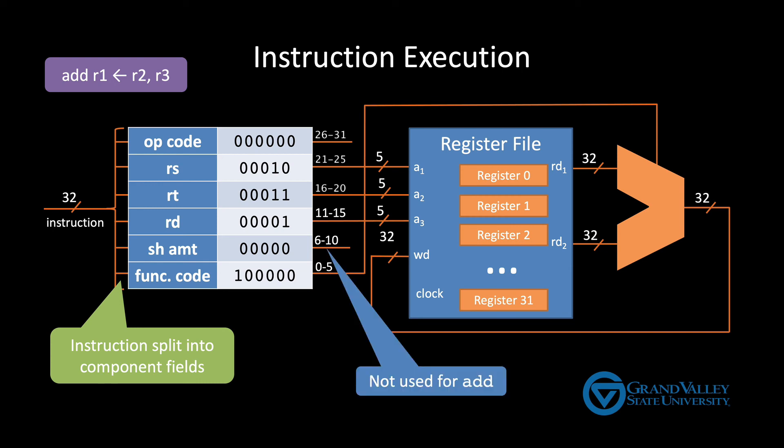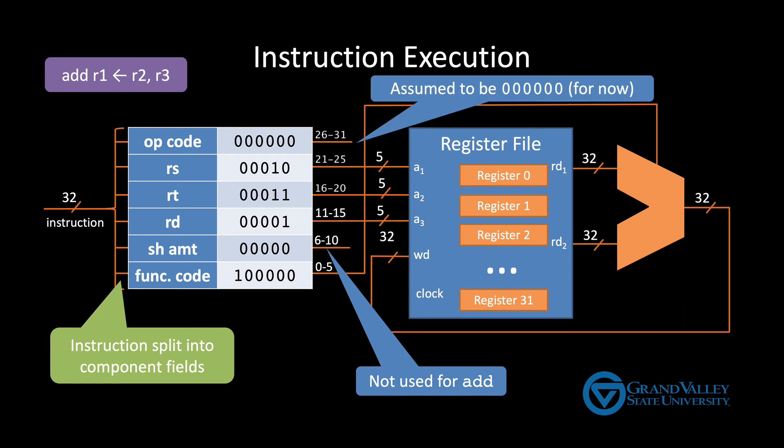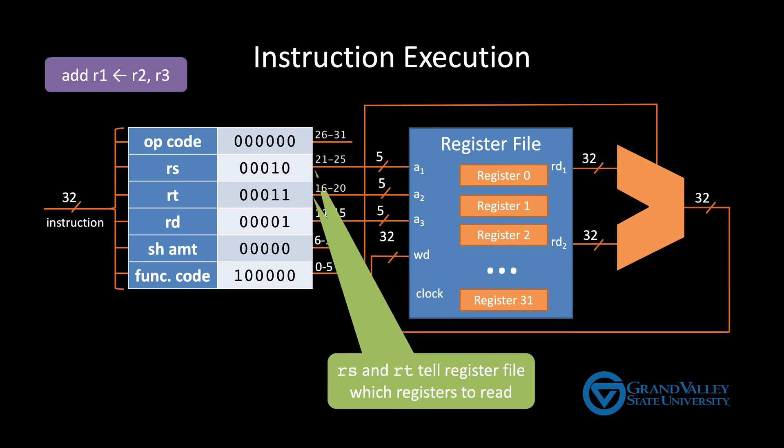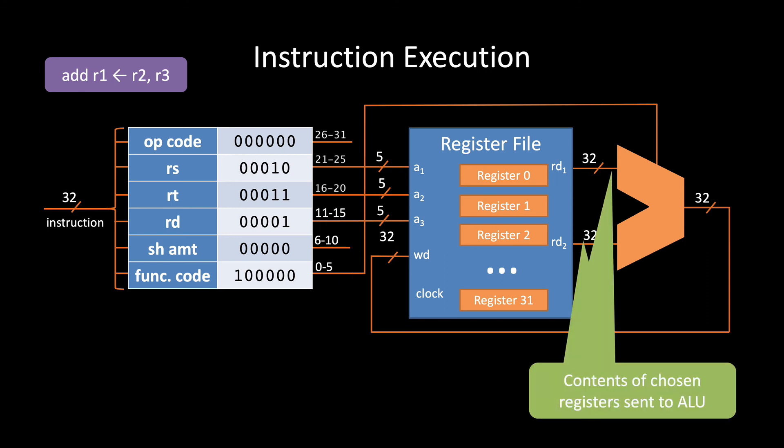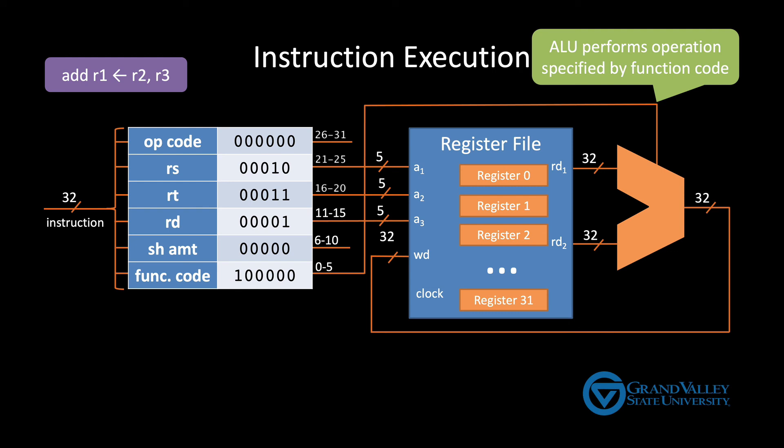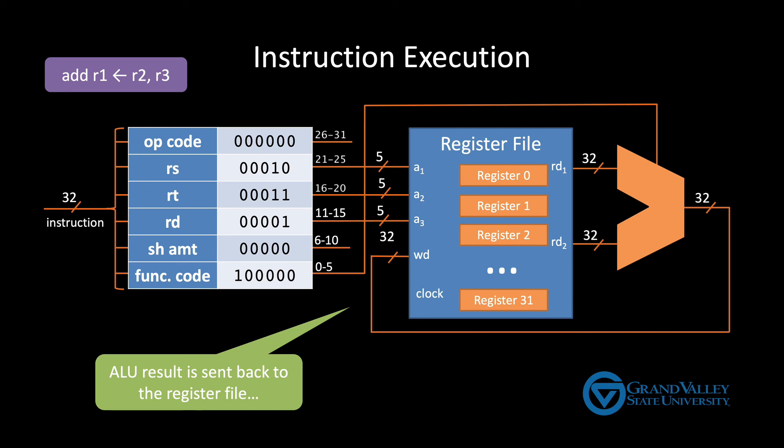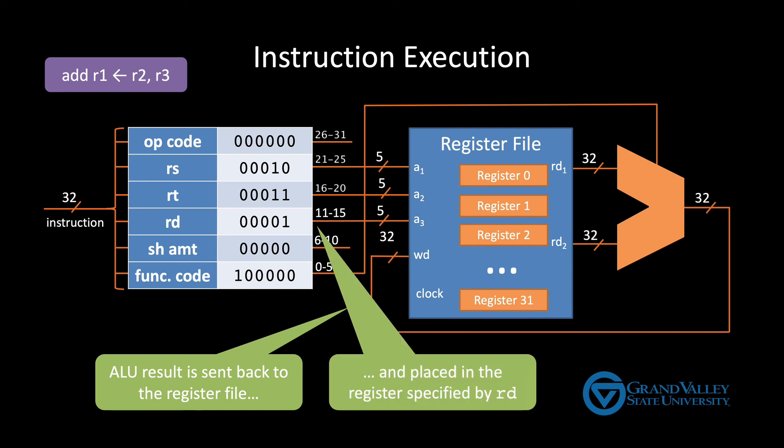For example, the add instruction doesn't use a shift amount. And because we're only talking about R-type instructions, the opcode is zero. Now, as we've seen before, the RS and RT fields become the selector wires on the muxes in the register file, which cause the contents of those registers to be sent to the ALU. The ALU performs the operation specified by the function code, which is addition in this case, and the result is sent back to the register file. When the clock ticks, that result is placed in the register specified by the value in the RD field.